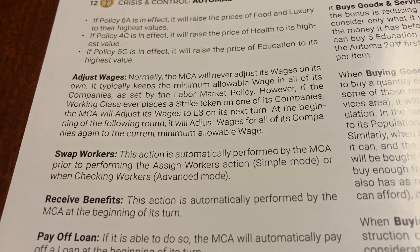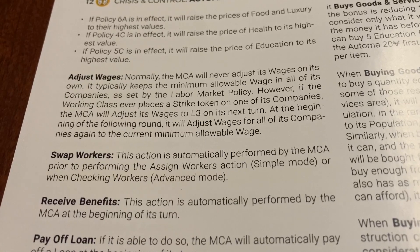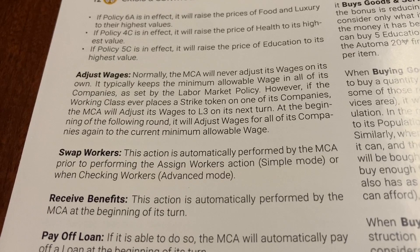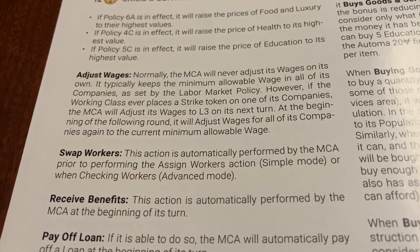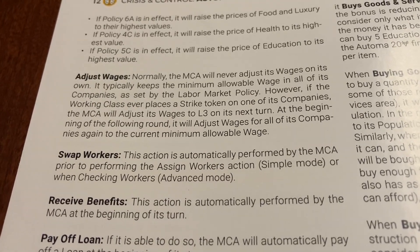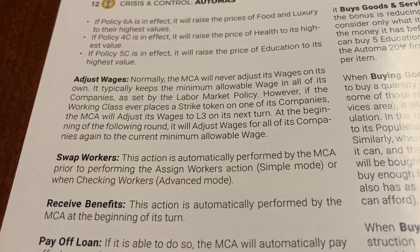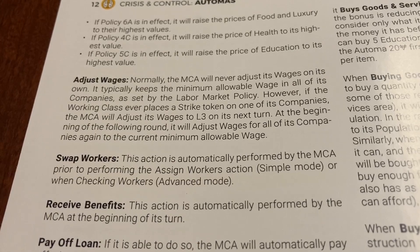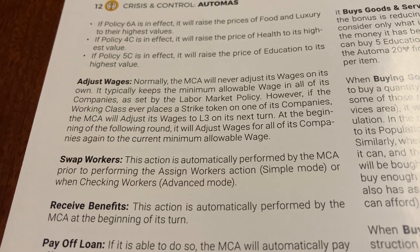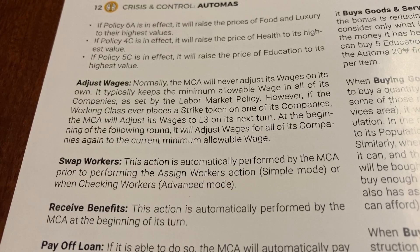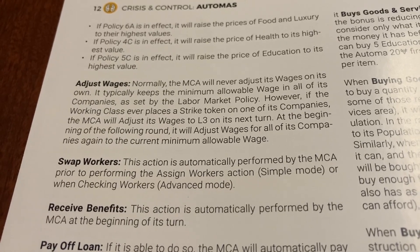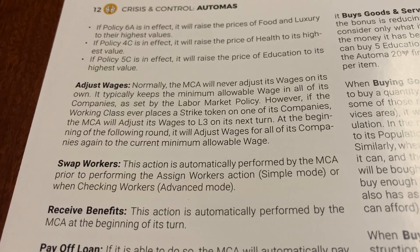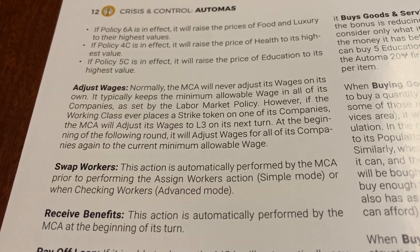When adjusting wages, typically they will not adjust wages on their own. They keep the minimum allowable wage in the company as set by the labor policy. However, if they place their strike tokens, the middle class will adjust their wages to L3 on the next turn, and then it will readjust the wages for its companies back to the minimum allowed in the next round.